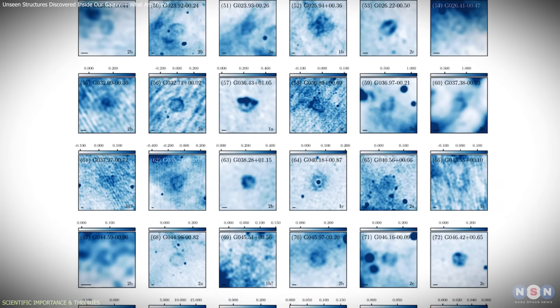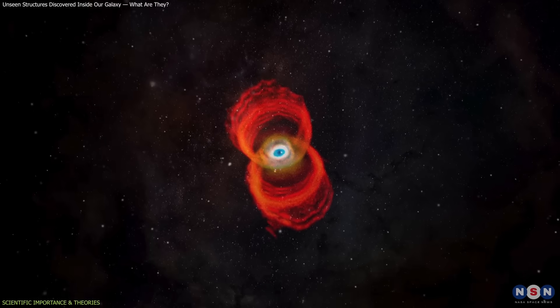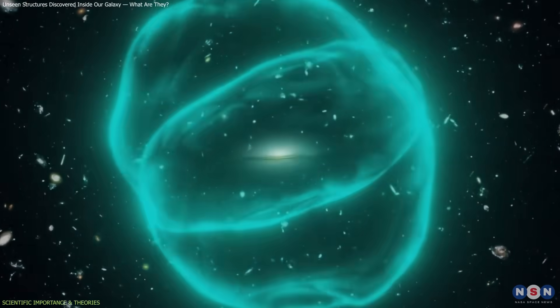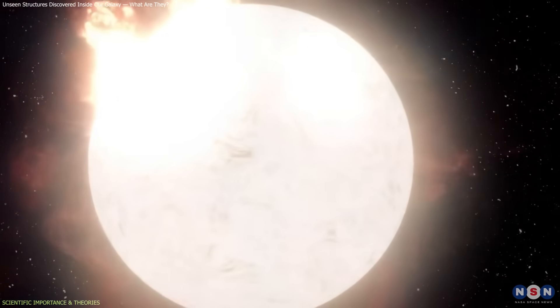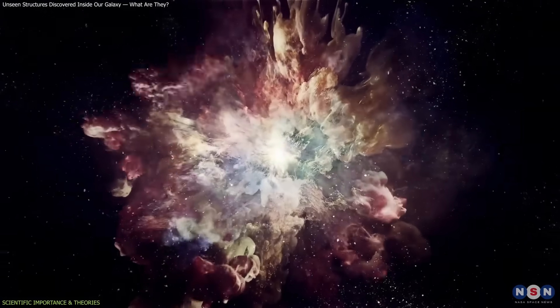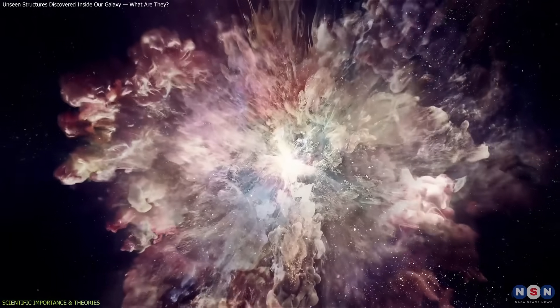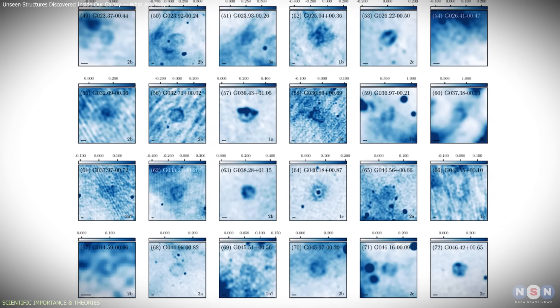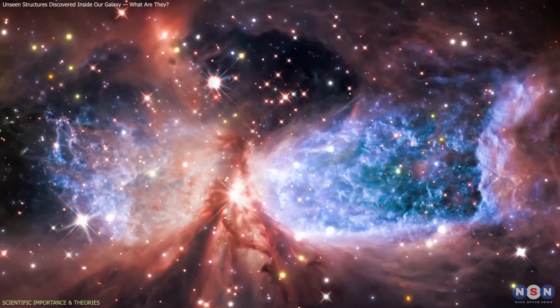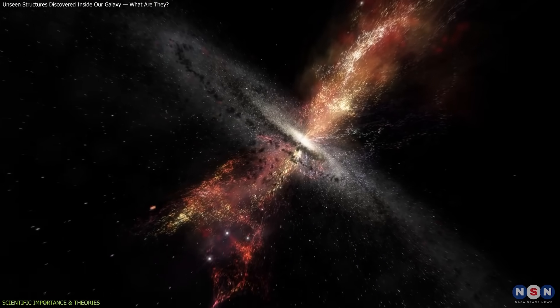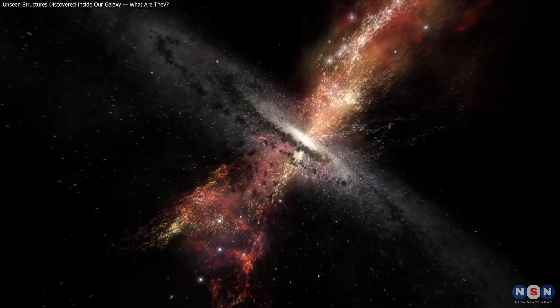What makes this discovery important is the scale of the population. These rings fill an observational gap between bright, well-known remnants and structures that were previously too faint to detect. Their presence implies that late-stage stellar activity and its impact on the galactic environment may be far more common than earlier estimates suggested. Beyond stellar evolution, mapping these rings also provides data on the structure of the interstellar medium. Shells and shocks can compress or heat surrounding gas, influencing how the galaxy recycles material and where new stars form.